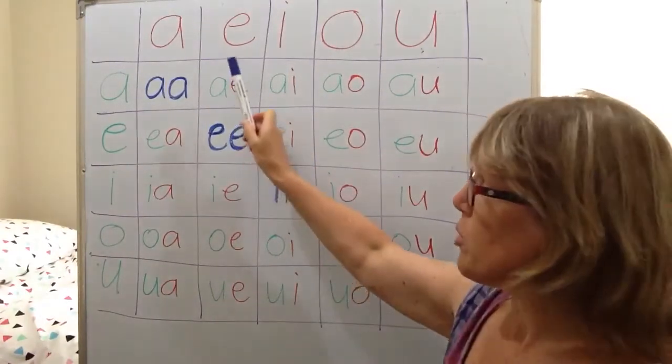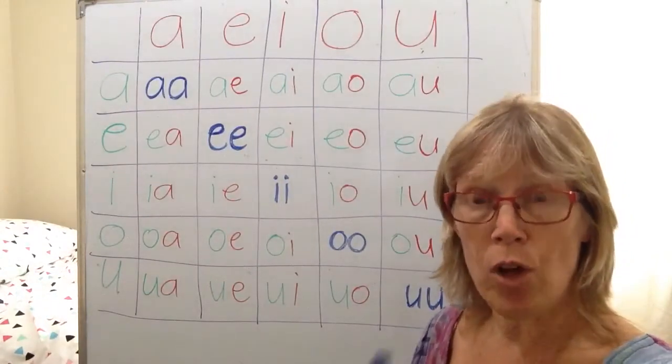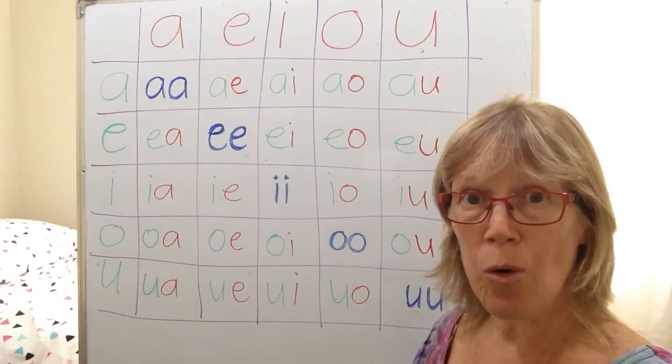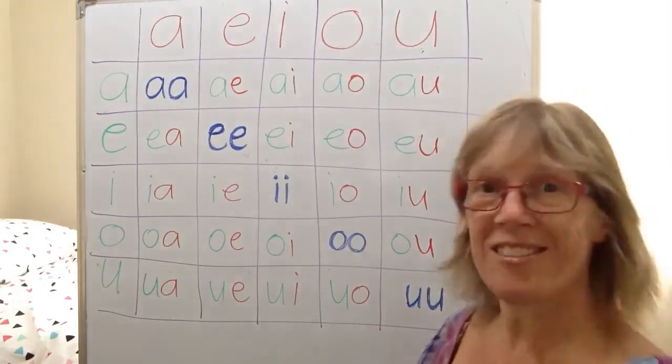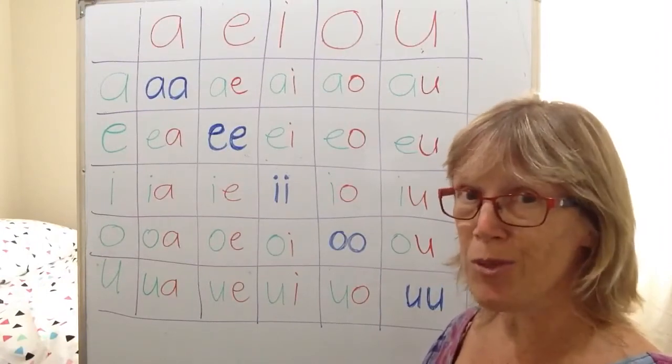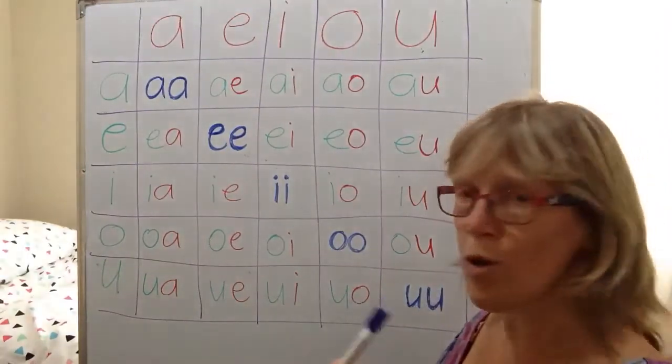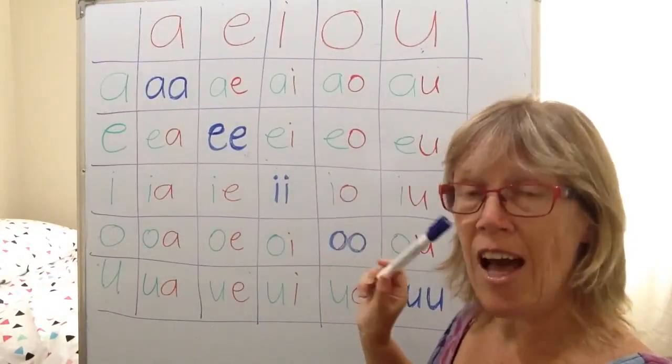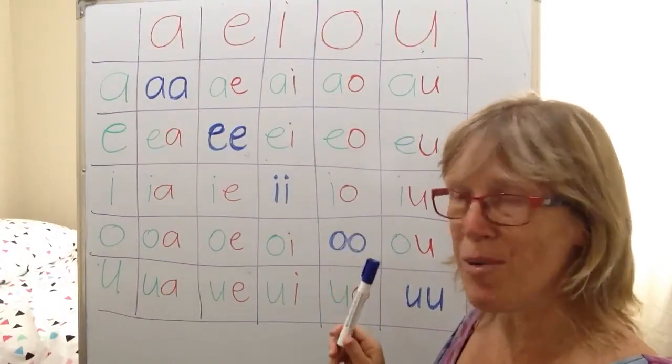And the other ones, we're just going to practice the song using our knowledge that we already have of A, E, I, O, U. And the key is to sing it to the tune of Twinkle Twinkle Little Star. So I really hope this will help you to see that all of these Māori vowel sounds are still consistently pronounced.